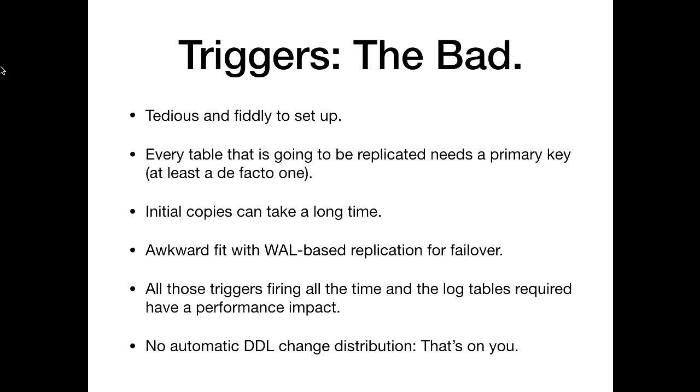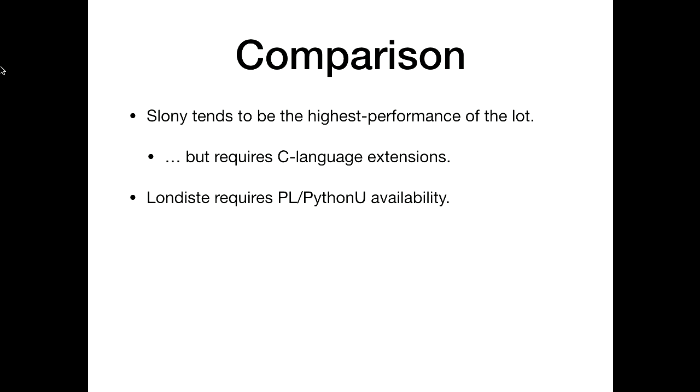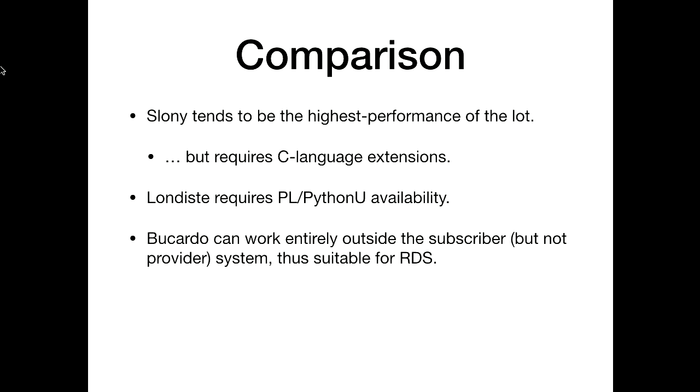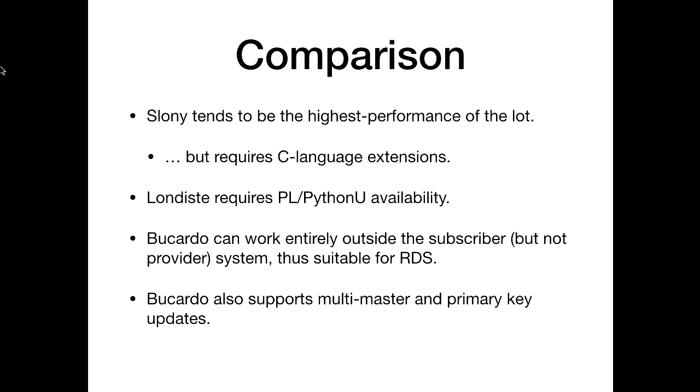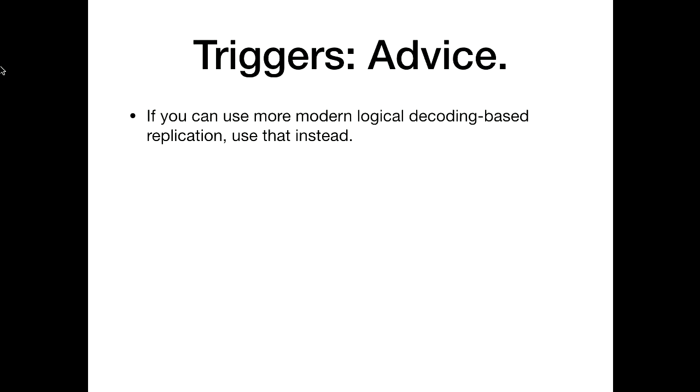There's no automatic DDL change distribution — that's on you. Most of them provide some tooling for applying DDL changes, but it won't do it automatically. Of them all, Slony tends to be highest performance because it's written in C and plugs directly in, but that requires C language extensions. Londiste requires PLpython. Bucardo can work entirely outside the subscriber but not on the provider system, so it's good for RDS where you can't create new extensions. For a long time this was the only game in town, but we now have more recent logical replication tools — if you can use those, use those instead. That's the future. If you're upgrading from before 9.4, these are still super useful for near-zero downtime upgrades.